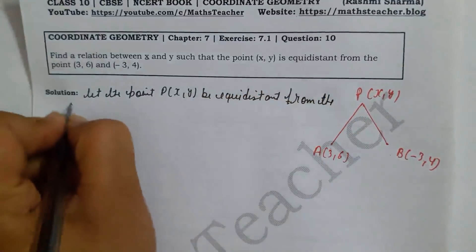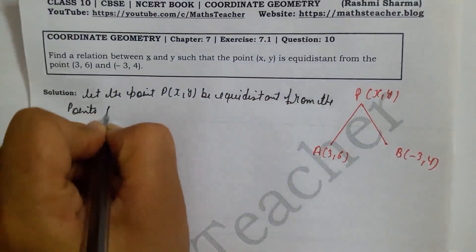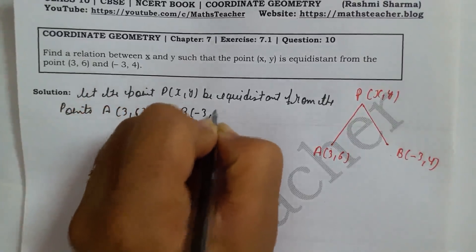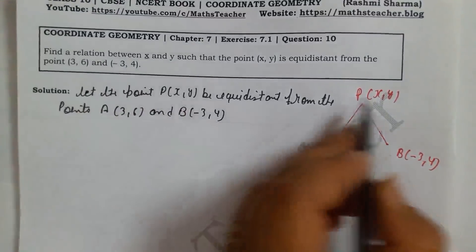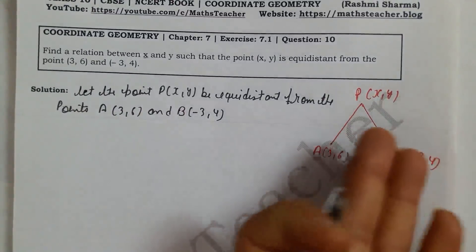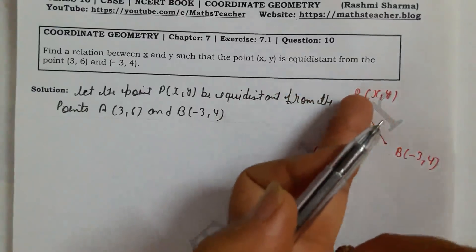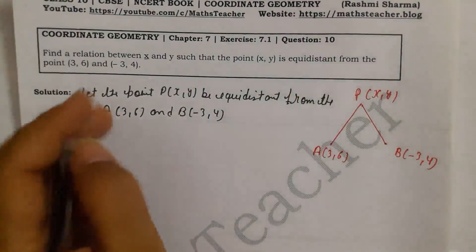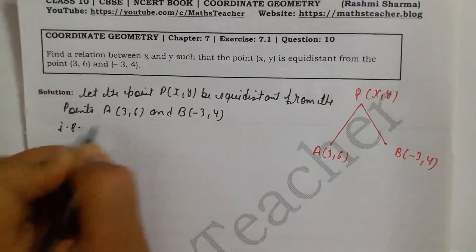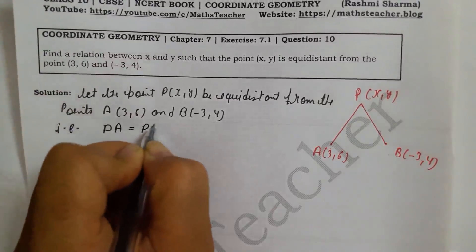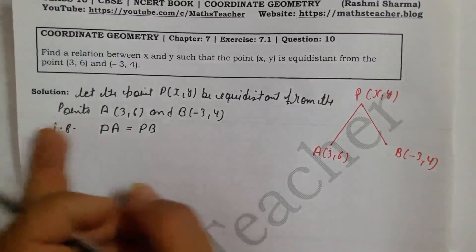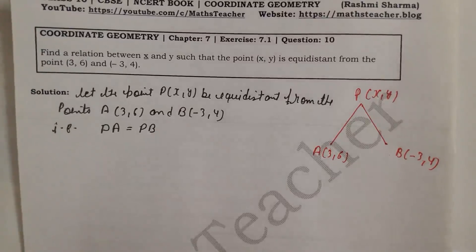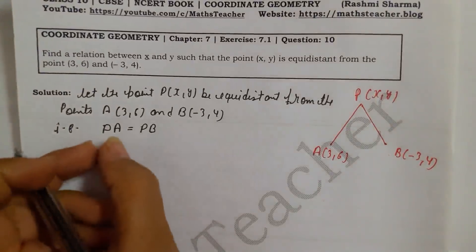From point A (3, 6) and point B (-3, 4), we have named the point P with coordinates (x, y). Since PA equals PB, we will apply the distance formula. PA and PB are distances, so we use: distance = √[(x₂ - x₁)² + (y₂ - y₁)²].